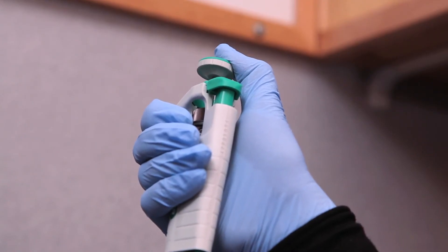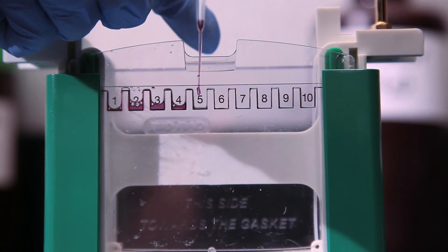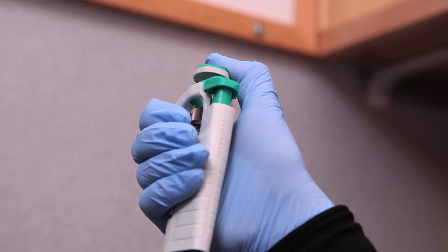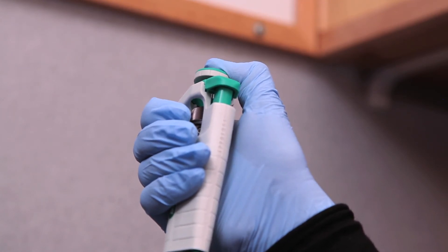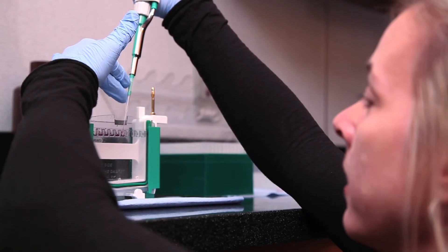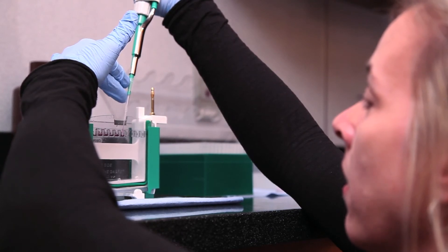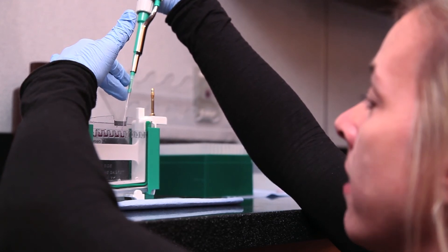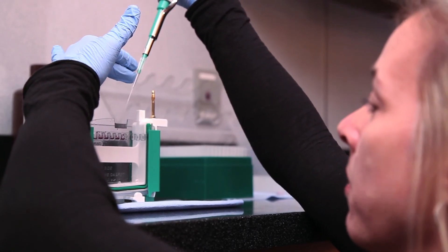And then I'm going to press my thumb to the first stop to release the contents of my sample. And then I'm going to keep pressing all the way to the second stop to completely release my sample. And then I'm going to hold my thumb on the second stop as I remove the pipette tip from the gel.